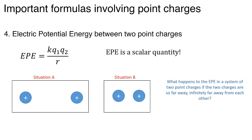This is one equation we haven't talked about: the electric potential energy between two point charges. If you have two point charges Q1 and Q2, they have an associated electric potential energy, and this electric potential energy is a scalar. Let's look at situation A and situation B.